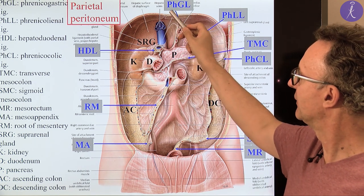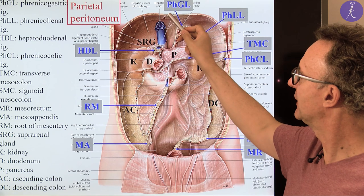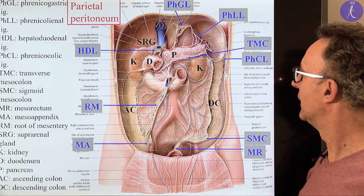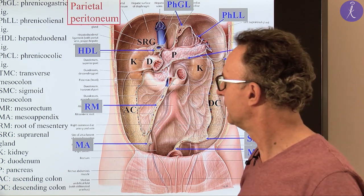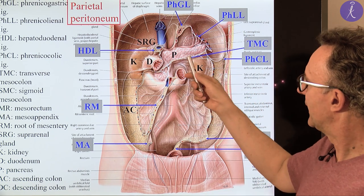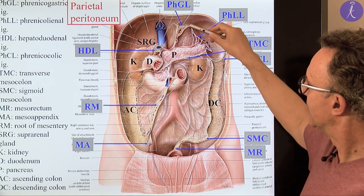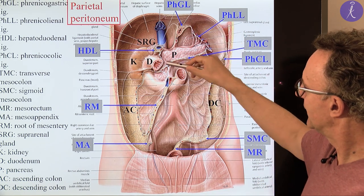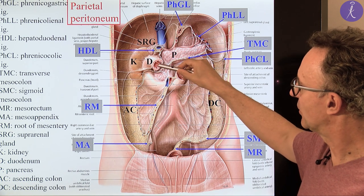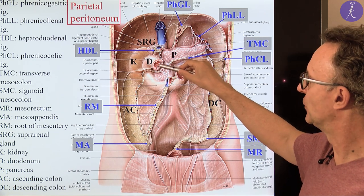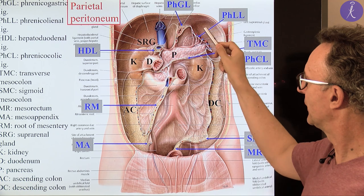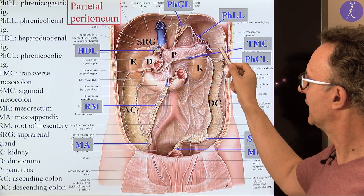You can see the falciform ligament in front, coming down to the navel. This is the esophagus, and here we see the superior horizontal part of the duodenum. The stomach was removed as well, together with the spleen.